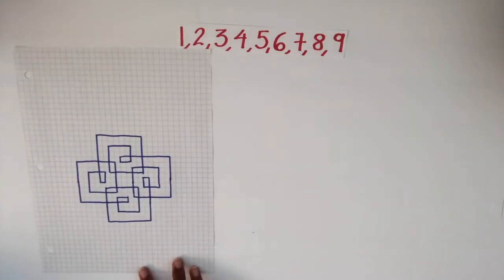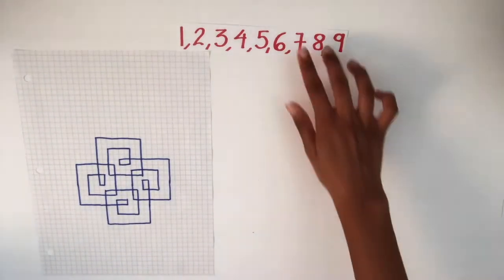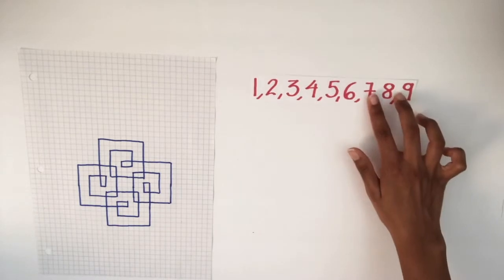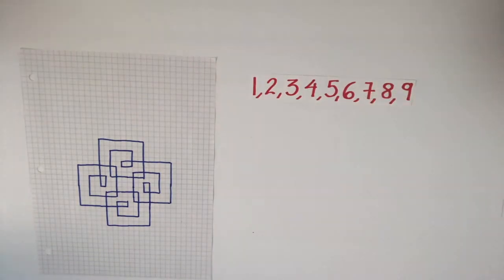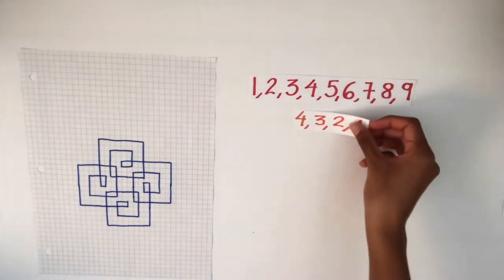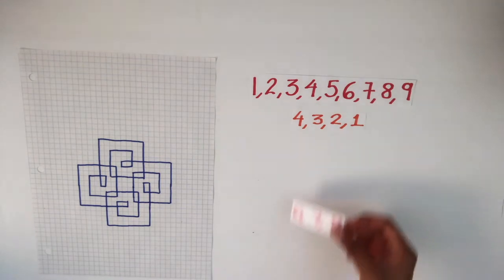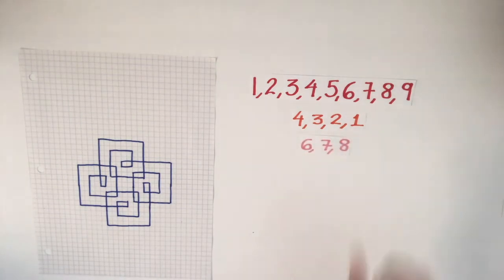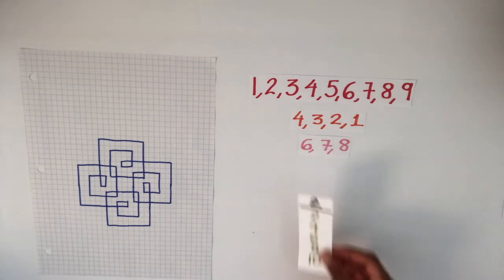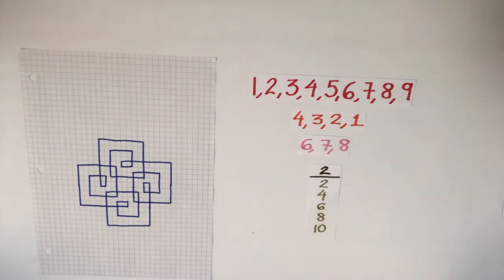Now that you have gotten the hang of it, you can also experiment with other sequences. You can go backwards, such as 4, 3, 2, 1, or even focus on a certain part of the sequence, such as 6, 7, 8. You can also try it with multiplication tables.